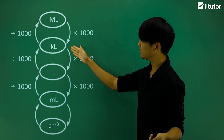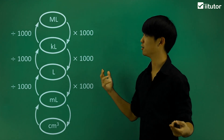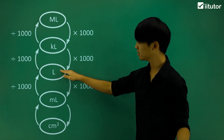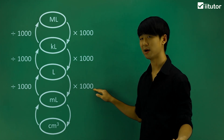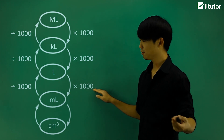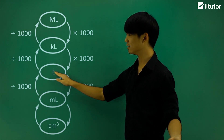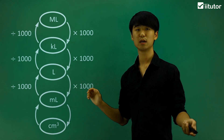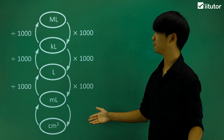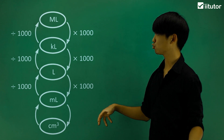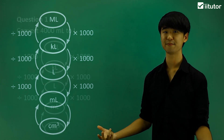We can see from the conversion that it's actually very nice and simple. Going from liters down to milliliters, we multiply by 1,000. Or if we go vice versa, from milliliters to liters, we divide by 1,000. Knowing these conversions, let's try and convert between the different capacities.